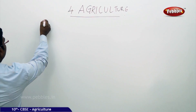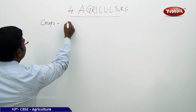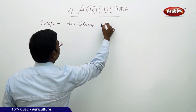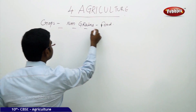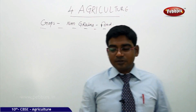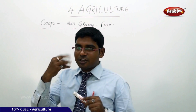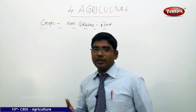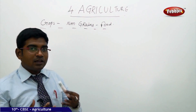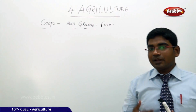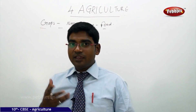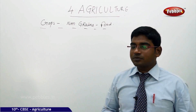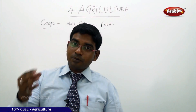Now we shall discuss the crops which are non-grain but food crops. When we talk about food crops generally, in North India we get chapati and in South India we get rice. Other than these, we also have non-grain food crops like vegetables, fruits, sugarcane, tea, and coffee. All these things which we consume are called food crops and non-grain crops, and they are also produced in India.